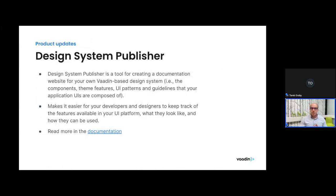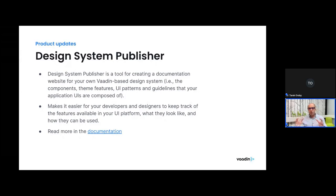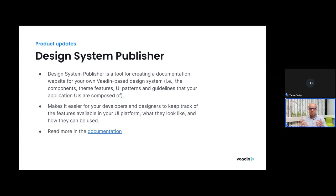Next is the Design System Publisher — not entirely new, but worth highlighting in relation to styling and theming. It is a commercial tool that is part of Vaadin Prime and Ultimate commercial subscriptions. This tool enables you to create a documentation website for your own Vaadin-based design system, including all the components, theme features, UI patterns, and guidelines — making it easier for developers and designers to work together and keep track of all available UI platform features.